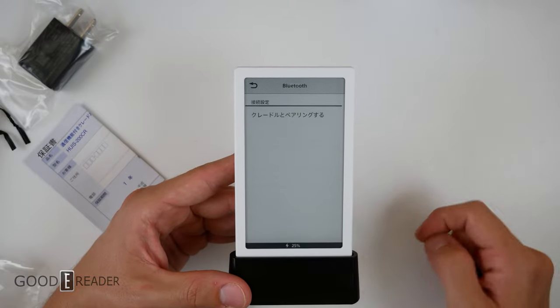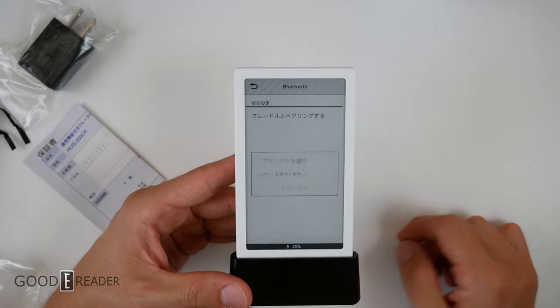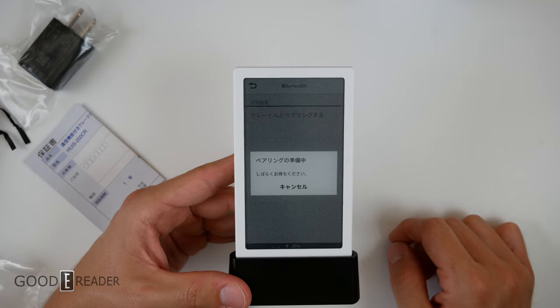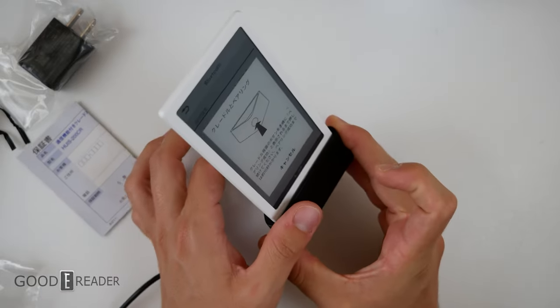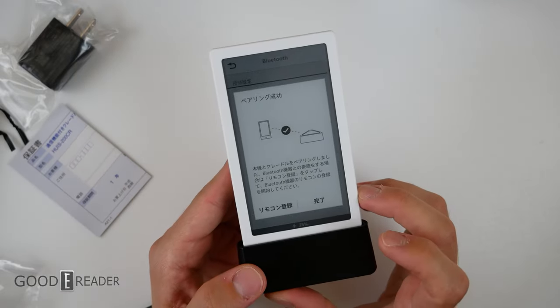So you click on Bluetooth and it says Cradle Link. So you click on that. It says wait a little bit. Then it says push the button at the back. So I'll go ahead and push that. And it seems that we are connected.